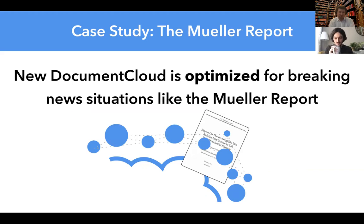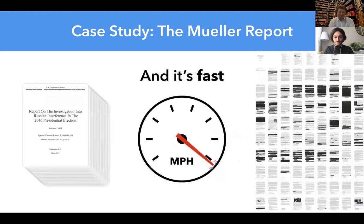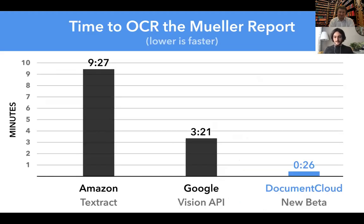The new Document Cloud is optimized for breaking news situations. We've thrown the Mueller report into the new system more times than I can count, and the system turns out to be really, really fast. This metric is 'Muellers per hour.' Amazon took nearly 10 minutes to OCR the 448-page document. Google did pretty admirably at around three minutes to OCR every page. And the new Document Cloud beta took 26 seconds during one of the tests. That's really fast. So let's see what it looks like in action.